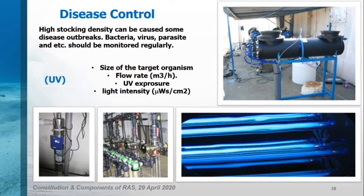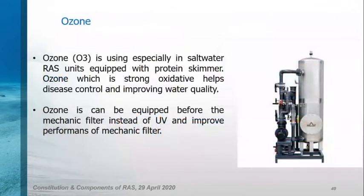Our main target is to prevent any disease outbreaks. For this reason we use sterilizers. The most used sterilizers are UV and ozone. An ideal UV system should be selected for the size of the target organism, flow rate, UV exposure time, and light intensity. Ozone, which is a strong oxidizer, also helps disease control and improving water quality. Ozone can be placed before the mechanical filter instead of UV and improves performance of the mechanical filter. It is mostly used in marine units and can also help increase dissolved oxygen in the water, but only in optimal dosages.